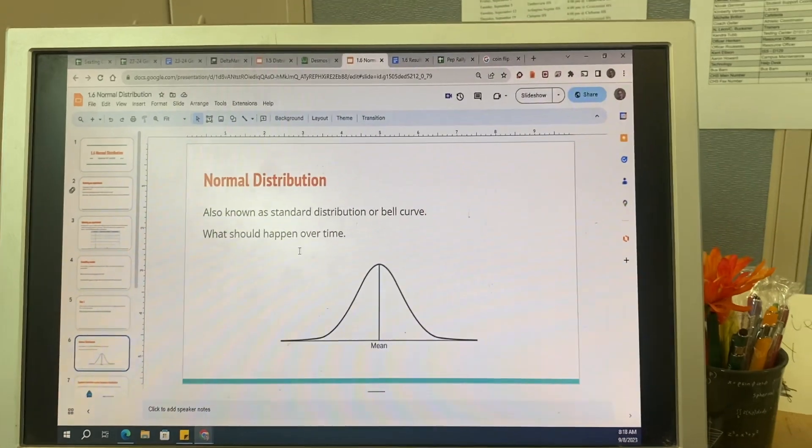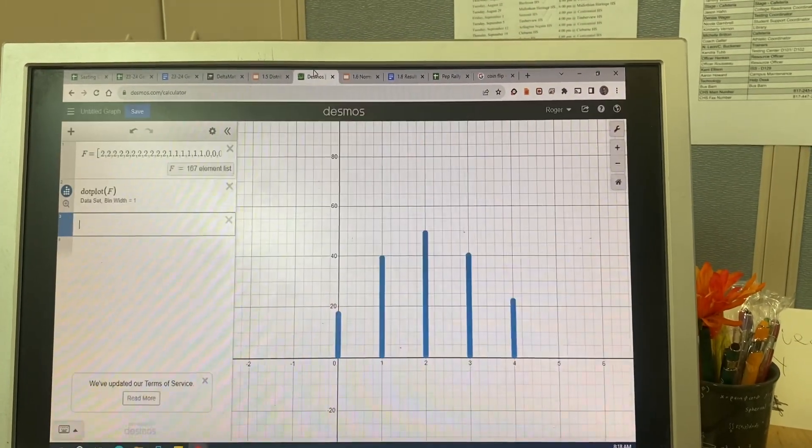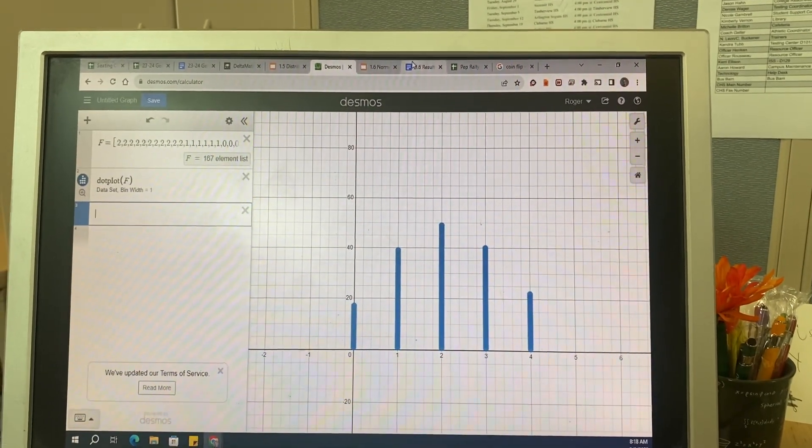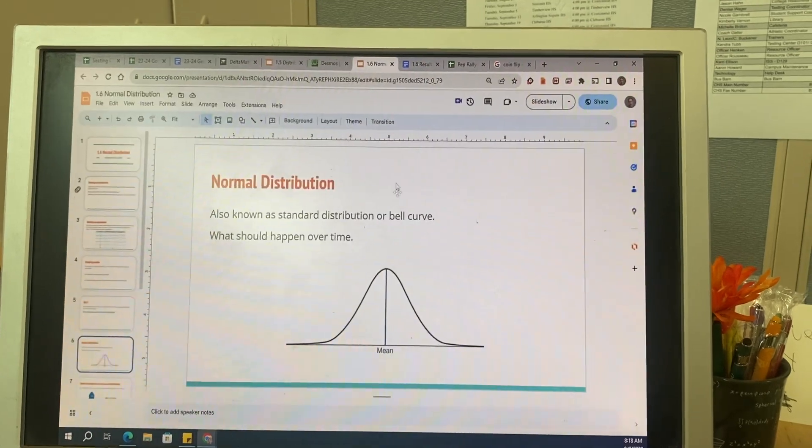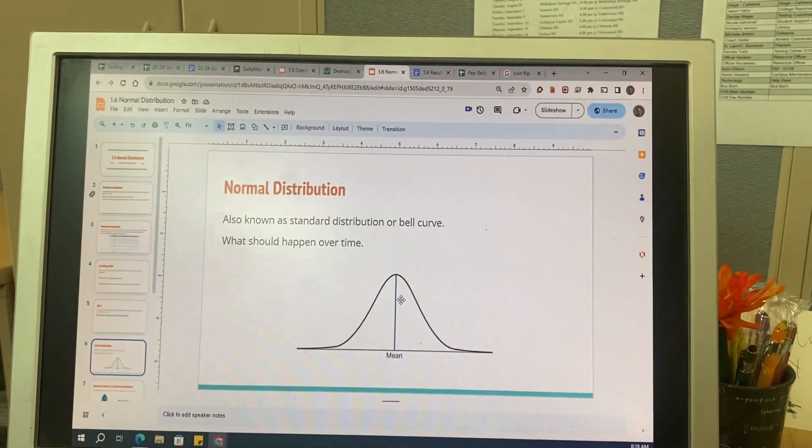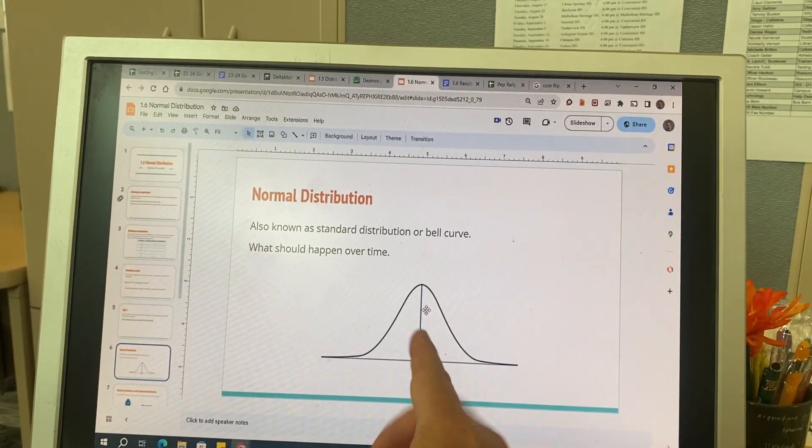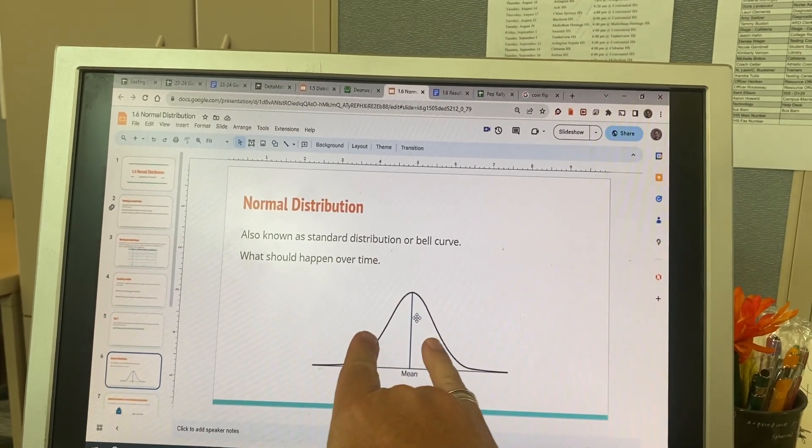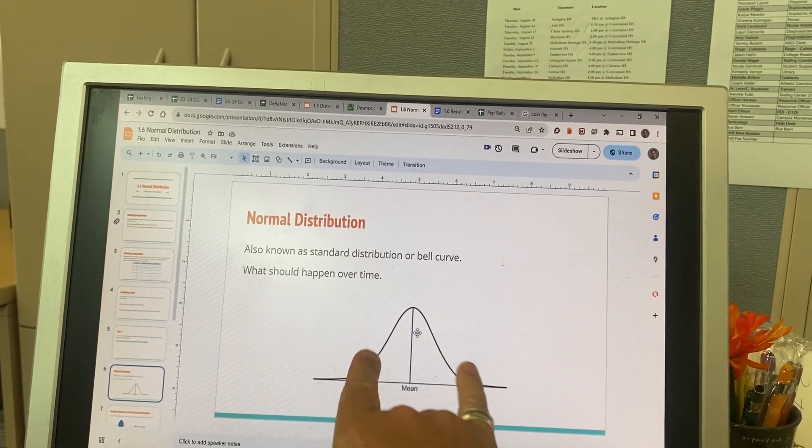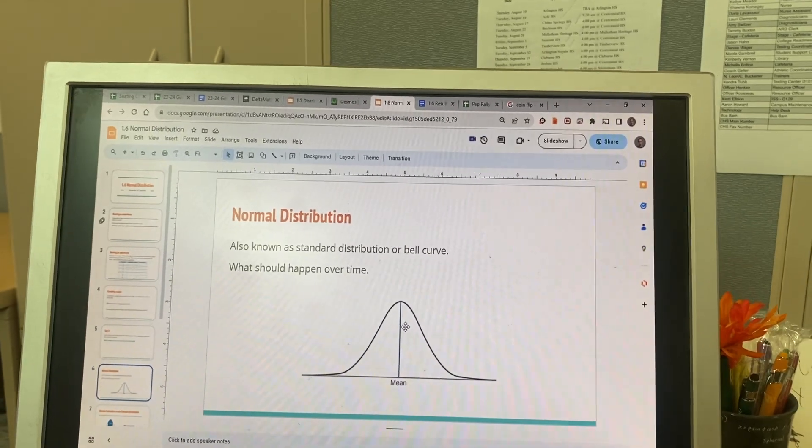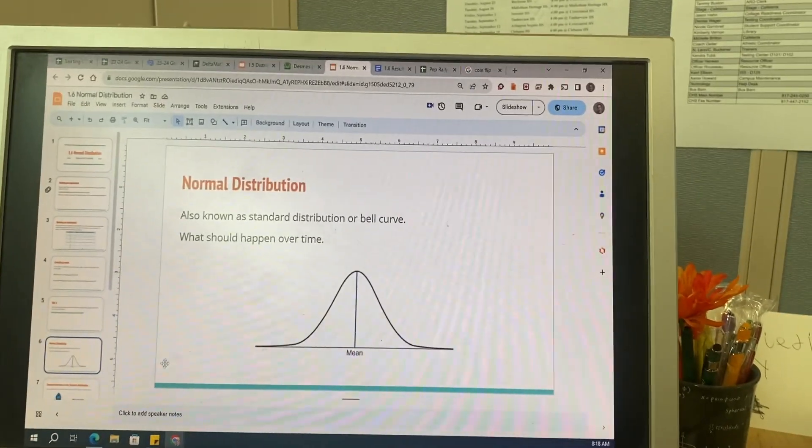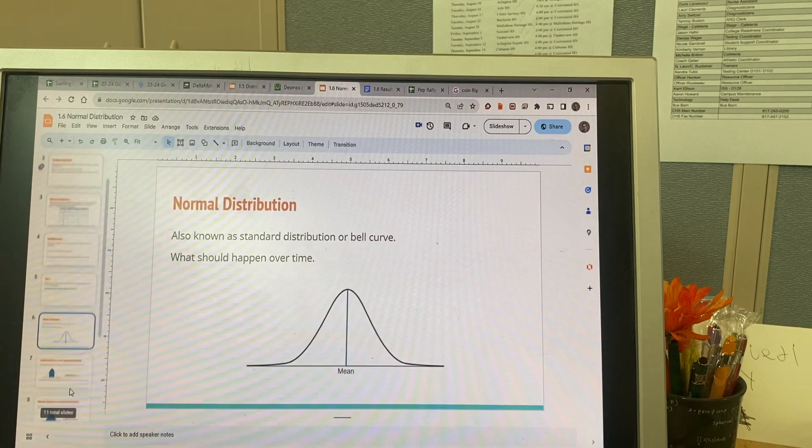And again, like comparing to our graph, our graph looks pretty close to that if you get the zoom just right. So this is what we would expect to happen over time. We have the mean, and all the stuff is kind of collected around the mean, and the further you get from the mean on both sides, the less times something is going to happen.